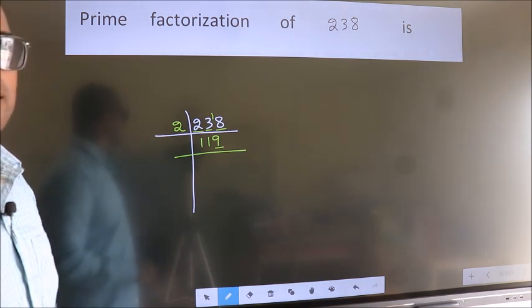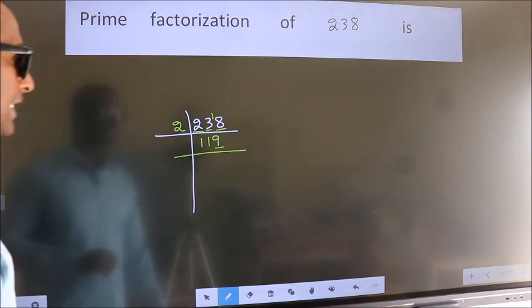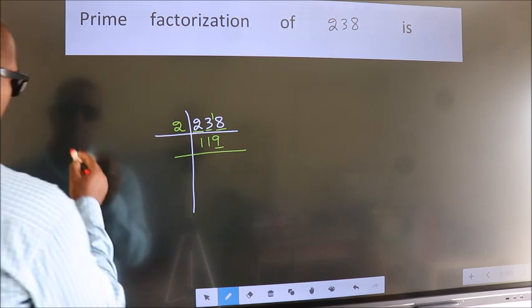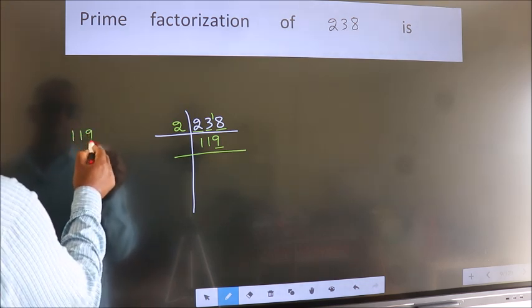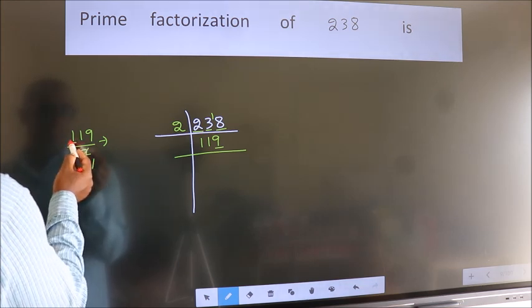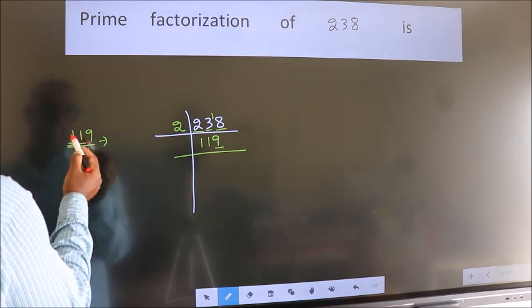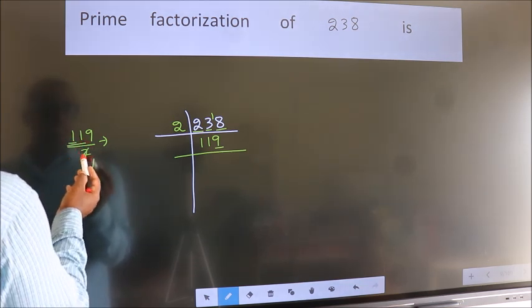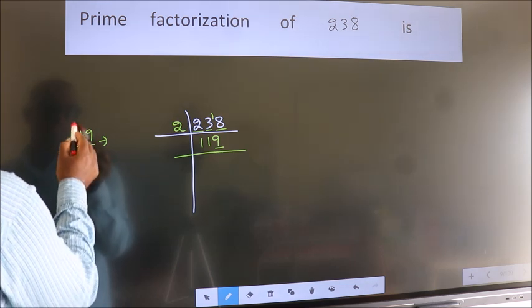Next prime number 7. Let us check divisibility by 7 here. 119 by 7. 1 smaller than 7, so take 2 numbers 11. A number close to 11 in 7 table is 7 times 1 is 7.